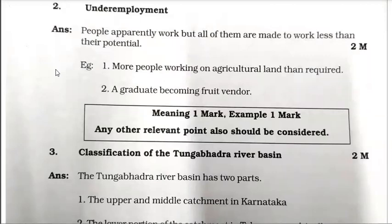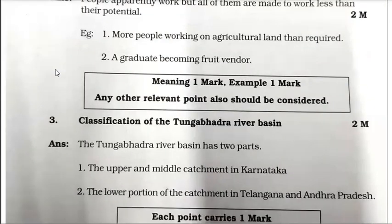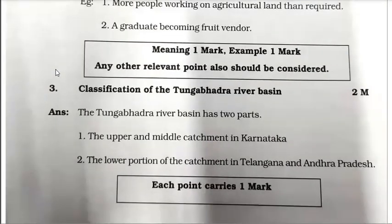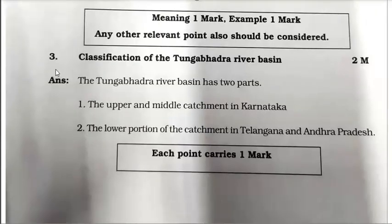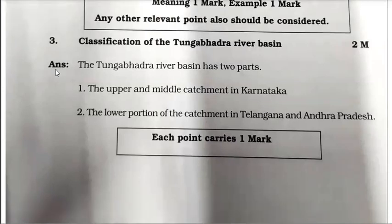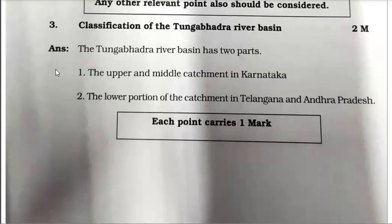What is the meaning of underemployment? If you write the meaning, you will get 1 mark, and if you give one or two examples, 1 more mark. One example is enough. For the classification of the Tungabhadra river basin, each point carries 1 mark — 2 points, 1 mark each.